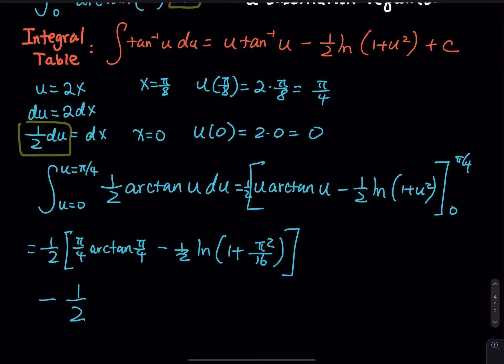And then the 0, we have 1 half, and then 0 times arc tangent 0 minus 1 half times ln 1 plus 0.